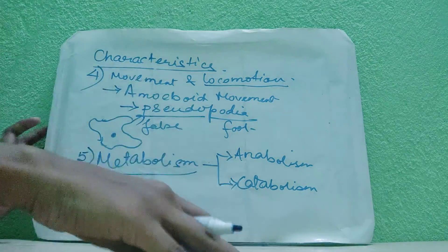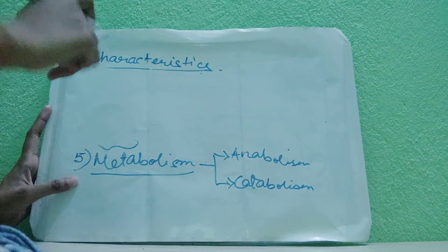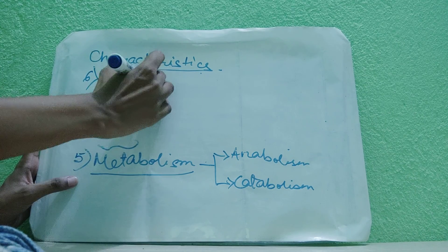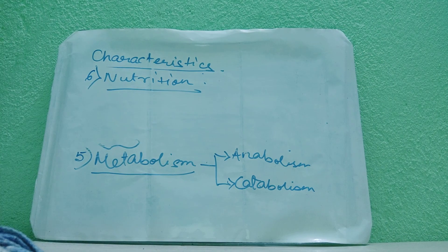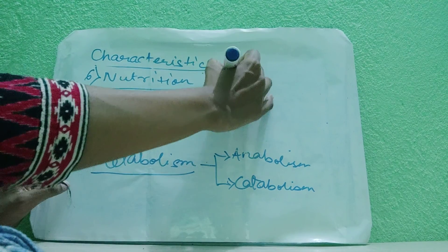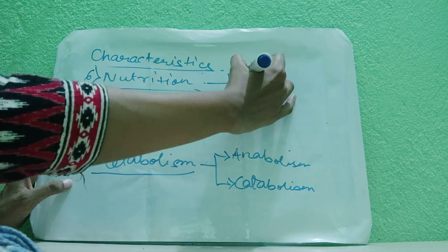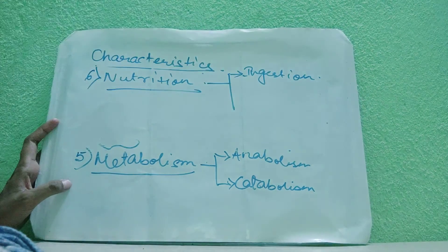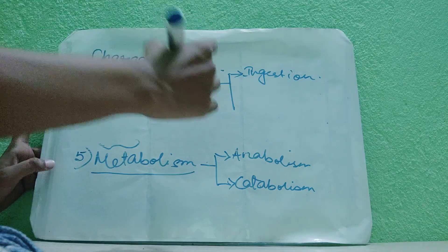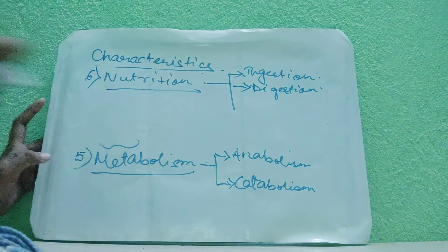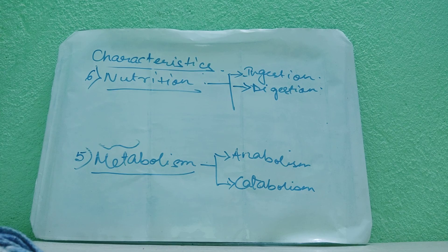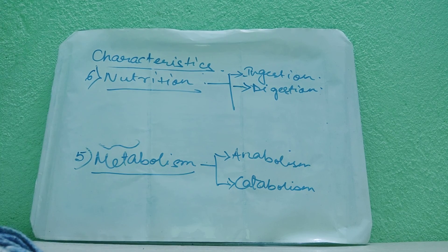The sixth characteristic is nutrition. Nutrition is a process by which different types of nutrients, food, or essential substances are absorbed in our body. Nutrition is divided into five steps. The first one is ingestion — ingestion means intake of food, or taking in food through the mouth. After taking it, the next part is digestion. Digestion means the food goes into the stomach and is digested or broken down into simple forms.